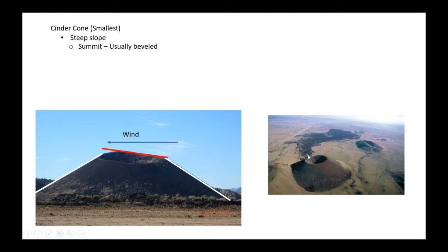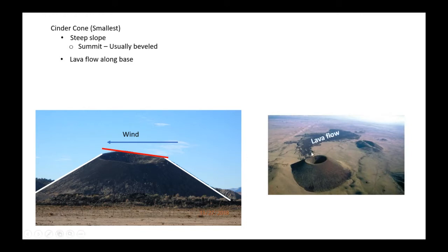A characteristic of a cinder cone is that there's a lava flow along its base. Cinder cones are not constructed in a way that can contain the magma in the conduit — they're loose cinders — so the magma escapes along the base. You can see that here in this aerial photograph of SP Crater.